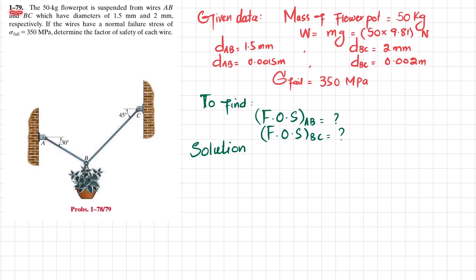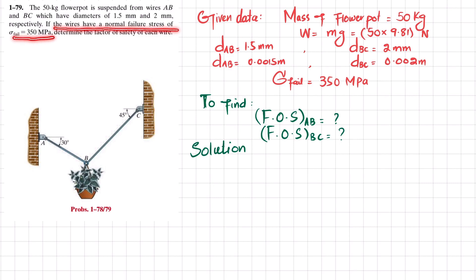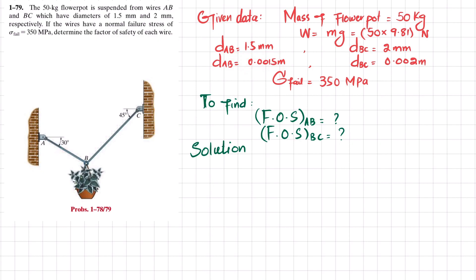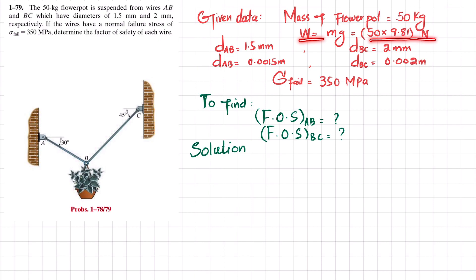Welcome back. Problem 1-79: a 50 kg flower pot is suspended from wires AB and BC, which have diameters of 1.5 millimeter and 2 millimeter respectively. Wire AB has a diameter of 0.0015 m, wire BC has a diameter of 0.002 m, the mass is 50 kg, and the failure stress is 350 MPa. Determine the factor of safety of each wire.